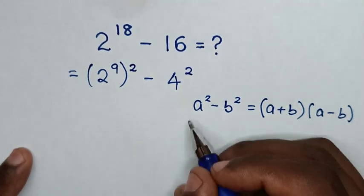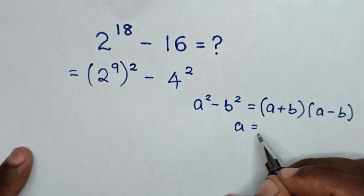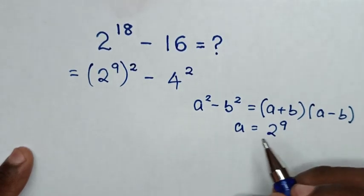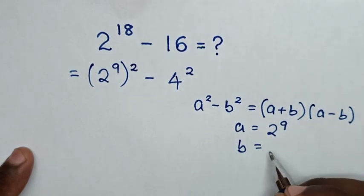When you compare a^2 with (2^9)^2, then a equals 2^9. And when you compare b^2 with 4^2, then b equals 4.